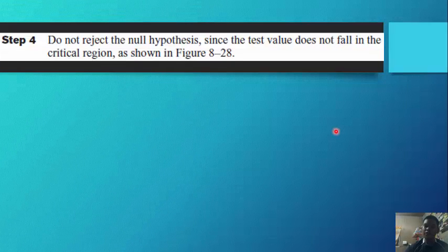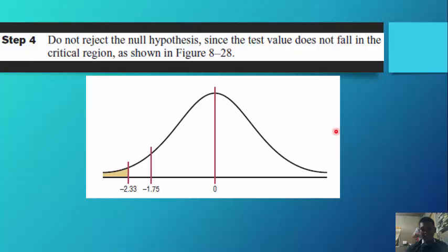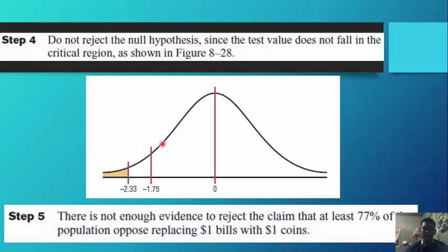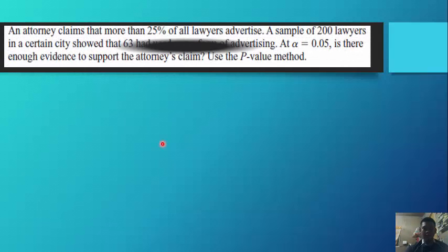Step 4: Do not reject the null hypothesis since the test value of negative 1.75 does not fall into the critical region of negative 2.33. To summarize: there is not enough evidence to reject the claim that at least 77 percent of the population opposed replacing the one dollar bills with one dollar coins.